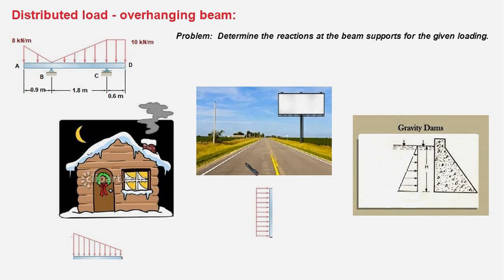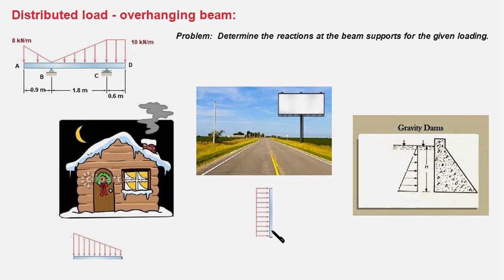This is another example of distributed load. You notice here an advertising billboard, and in the presence of strong winds the force acts on the entire area of the billboard and not just a single point. The profile of the load on the cross section of the billboard is shown here — it is uniform throughout its area, as against this profile which is uniformly varying.